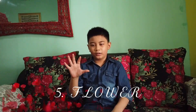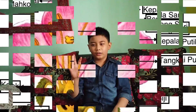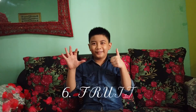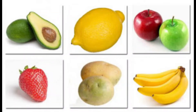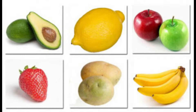Number 5: Flower. The flower is an important part of plant reproduction. Number 6: Fruit. The fruit serves to produce plant seeds.